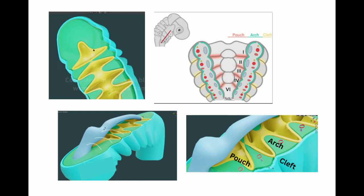Each pharyngeal arch has its own artery, nerve supply, muscular component, and skeletal component. This is the basic concept: the pharyngeal cleft, the pharyngeal arch, and the pharyngeal pouch.